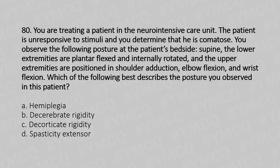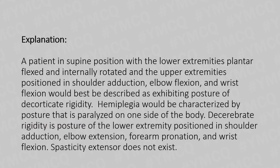Option A: Hemiplegia. Option B: Decorticate rigidity. Option C: Decerebrate rigidity. Option D: Spasticity extensor. A patient in supine position with lower extremities plantar flexed and internally rotated, and upper extremities positioned in shoulder adduction, elbow flexion, and wrist flexion would be best described as exhibiting the posture of decorticate rigidity.